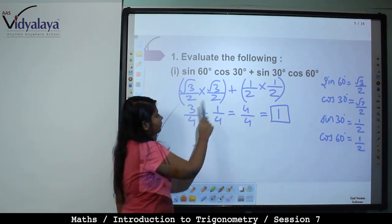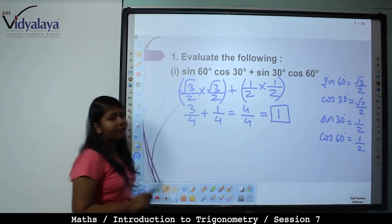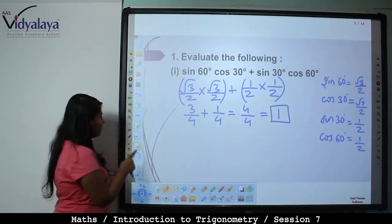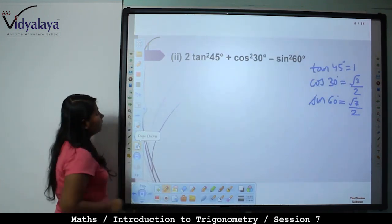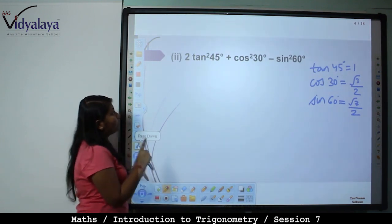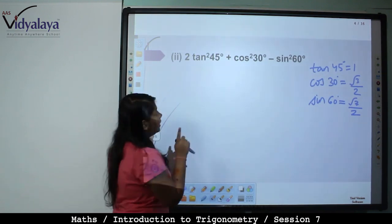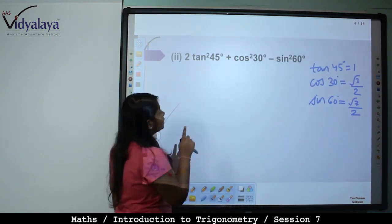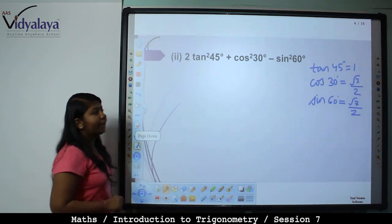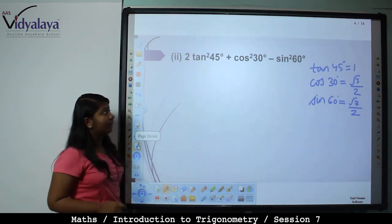We just substituted the values, solved it, and got the answer 1. Next: 2 tan square 45 degrees plus cos square 30 degrees minus sin square 60 degrees.